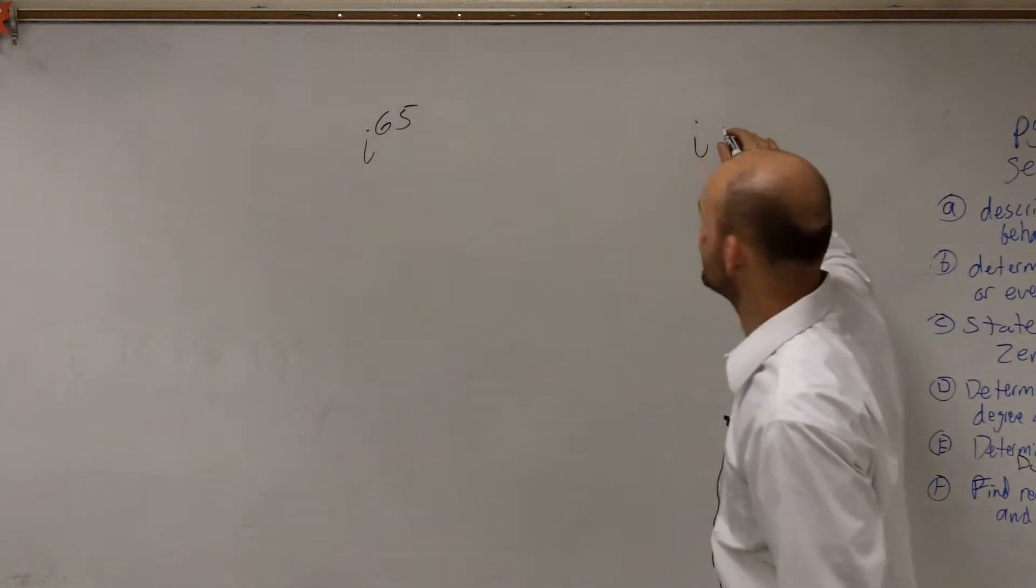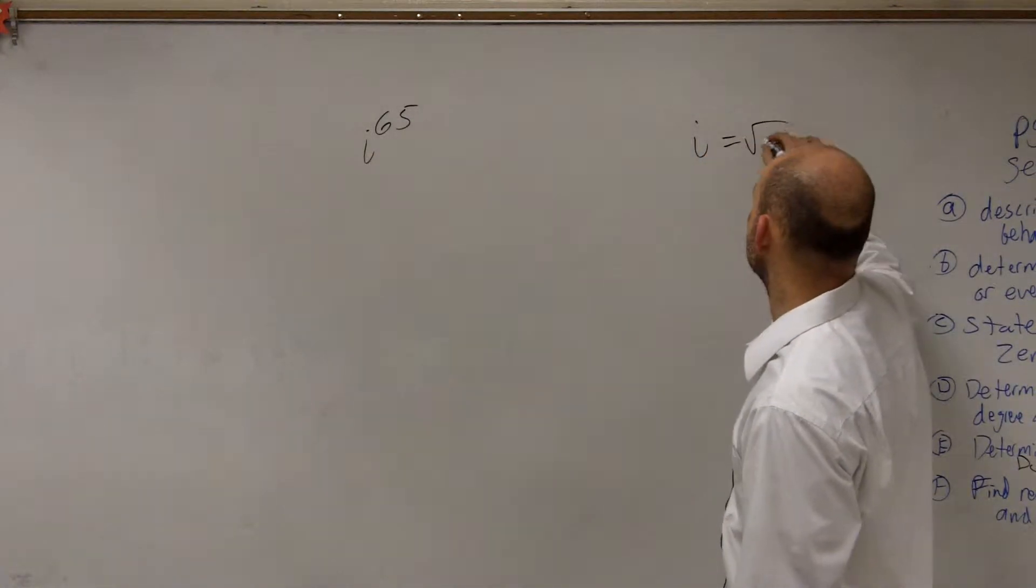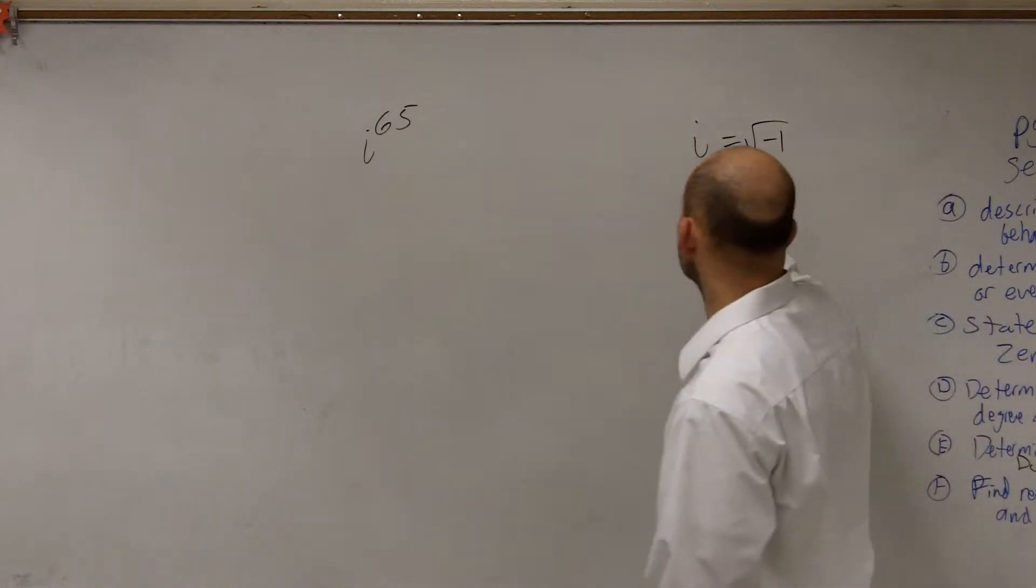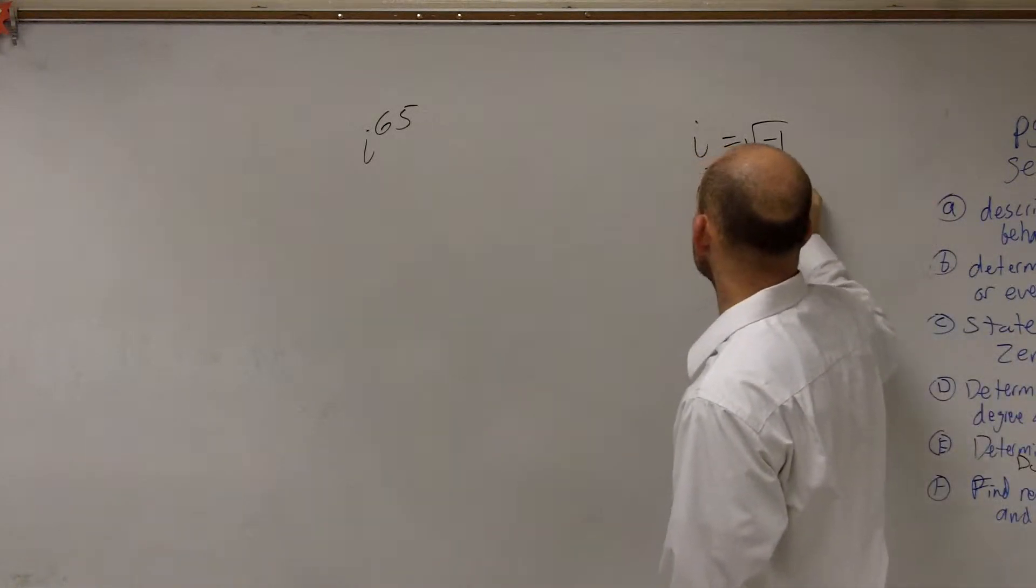I told you guys to keep these down. We had i, which we said was equal to the square root of negative 1. So if we square both sides, we get i squared equals negative 1.